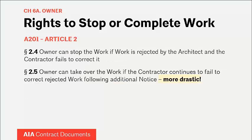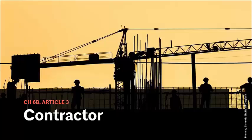Stopping work and taking over the contractor's work is really serious — as Kevin says, we're now entering nuclear war territory. Here, as elsewhere in the general conditions, when drastic steps are required, you'll see an escalating series of actions, required notices, timeframes, and multiple opportunities for the non-performing party to correct the problem. But if things get as far as the owner taking over portions of the work, this effectively creates the contractor's default to their obligations, and it's a symptom of much larger problems.